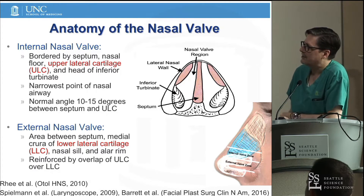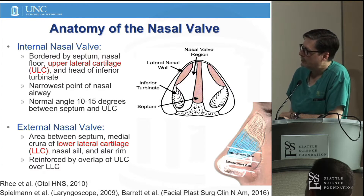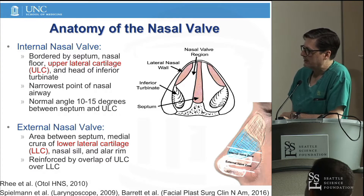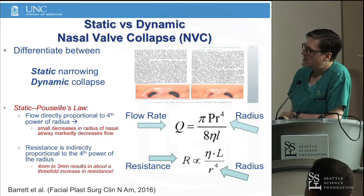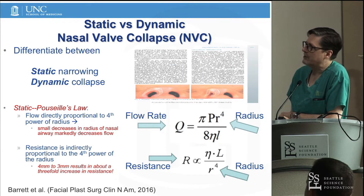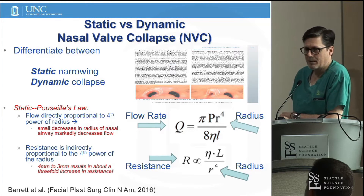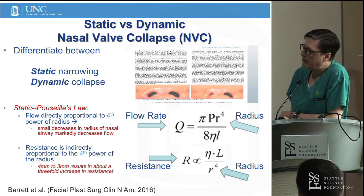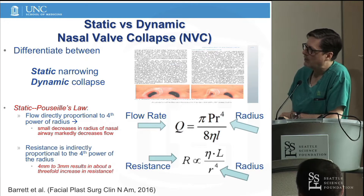Just to remind you, the internal nasal valve is really formed by the upper lateral cartilage and the head of the inferior turbinate, and it is the narrowest point of the nasal airway. The external valve is really down over the ala and the lower lateral cartilage. It's important to consider both static narrowing as well as dynamic collapse.